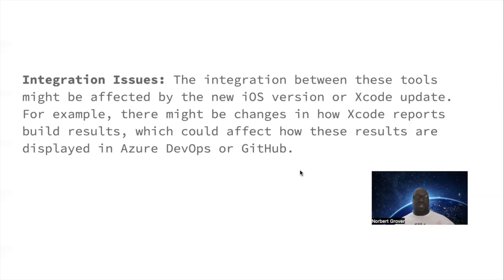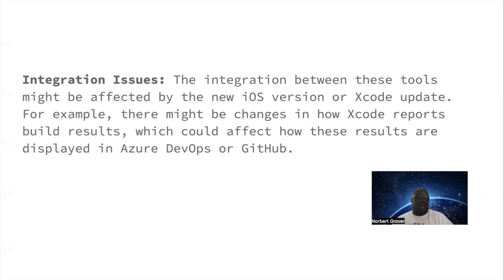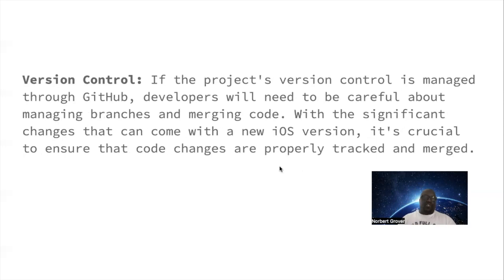Integrated issues: the integration between these tools might be affected by the new iOS version or Xcode updates. For example, there might be changes in how Xcode reports build results, which could affect how those results are displayed in Azure DevOps or GitHub. For version control managed through GitHub, developers will need to be careful about managing branches and merging code given the significant changes that can come with a new iOS version — it's crucial to ensure that code changes are properly tracked and merged.